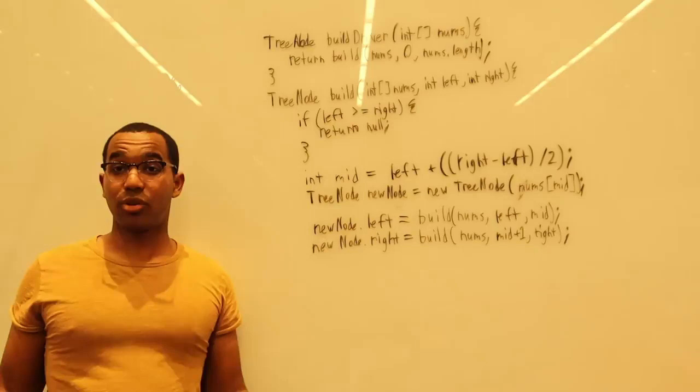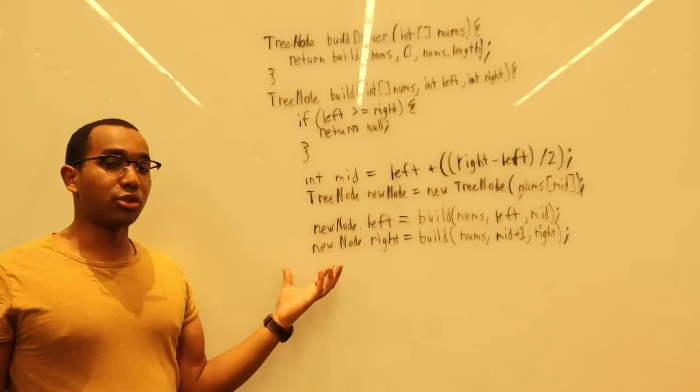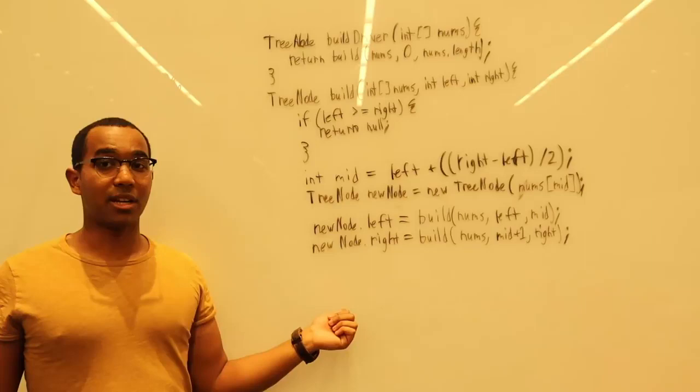And then the right subtree will build. It will build from the next guy after mid all the way to the right boundary. And that will generate a balanced right subtree. And then we return the new node because now it's populated. And we trust our recursion is going to do its thing.